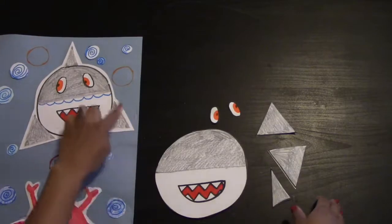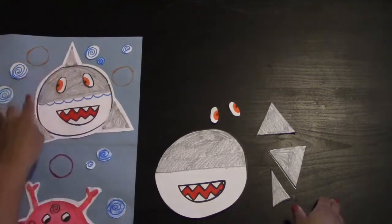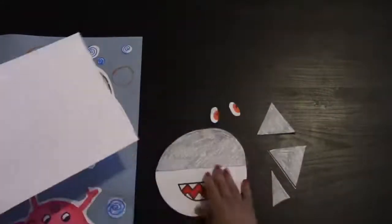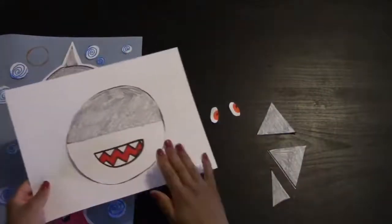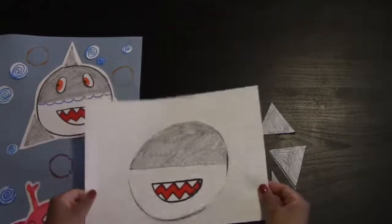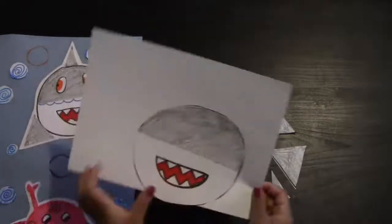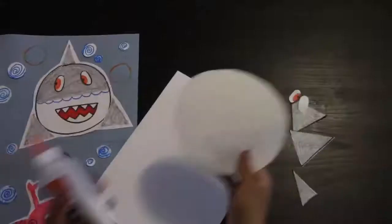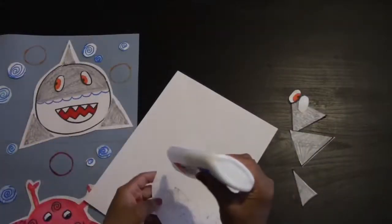If you notice, I have a small white ring around my shark. You do not have to do this part, but I like the look of it, so I'm going to do it. You can also just glue your shark onto the paper or you can do this step. If not, you can skip this step and go ahead and start gluing your shark together on the background.